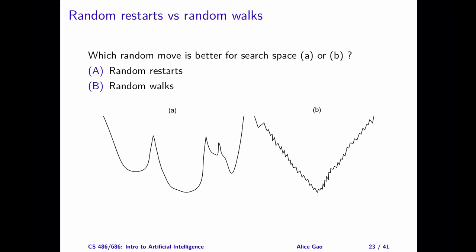Let's think about the two types of random moves. When is it a good idea to use one random move versus the other? Consider two different search spaces, A and B. Which type of random move is better for which search space? The correct answers are: random restarts are better for search space A, whereas random walks are better for search space B.